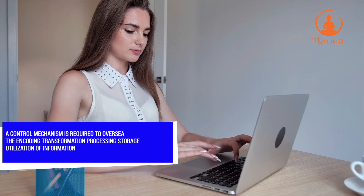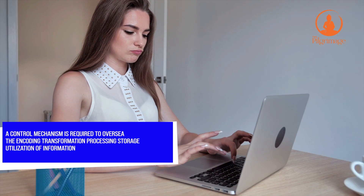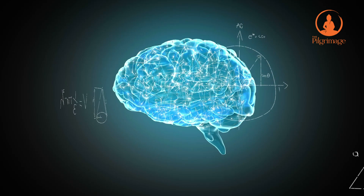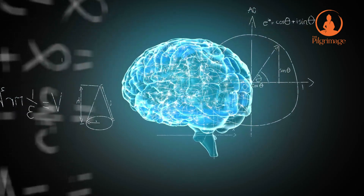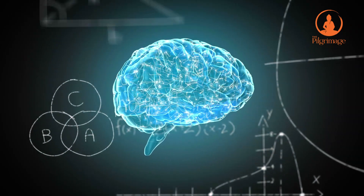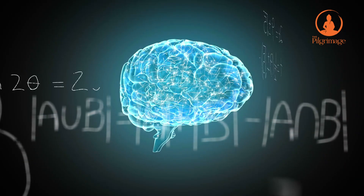A second principle is that a control mechanism is required to oversee the encoding, transformation, processing, storage, retrieval, and utilization of information. That is, not all of the processing capacity of the system is available. An executive function that oversees this process will use up some of this capability. When one is learning a new task or is confronted with a new environment, the executive function requires more processing power than when one is doing a routine task or is in a familiar environment.